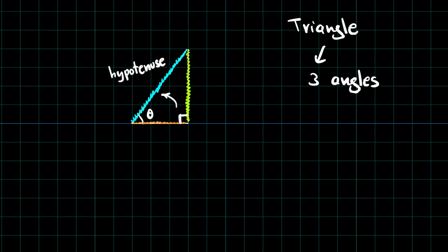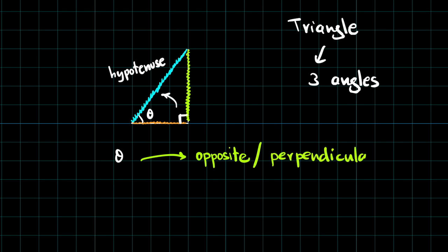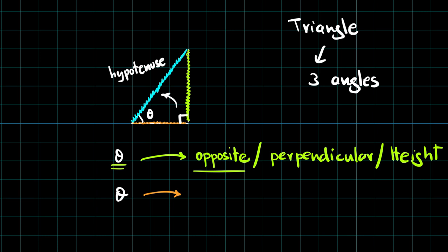If I label this angle as theta, with respect to theta, the opposite is the green side. People also call it the perpendicular and also refer to it as the height. But I personally prefer referring with respect to the angle, and opposite is the best terminology. With respect to theta, the side closest to theta is the adjacent side, also referred to as the base.